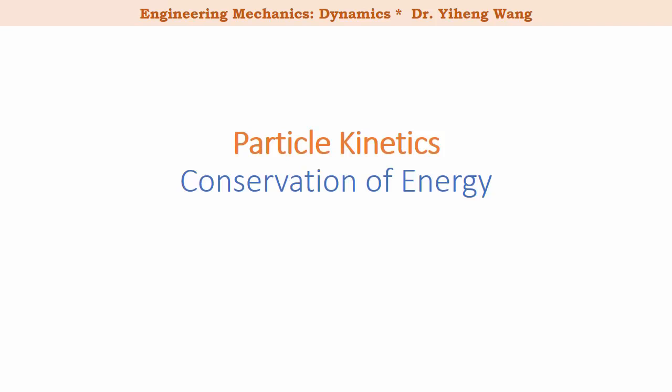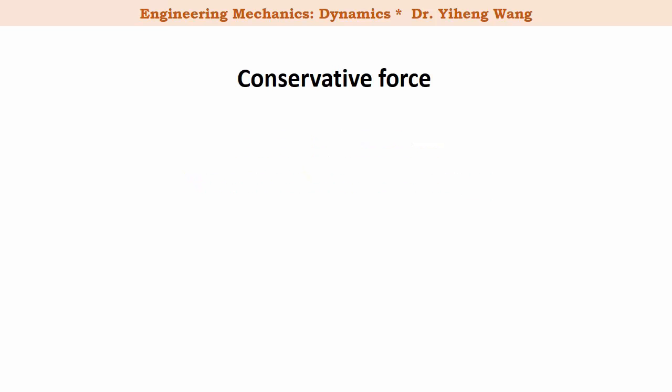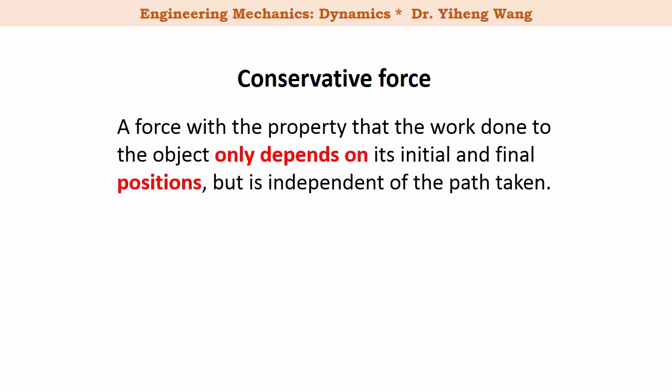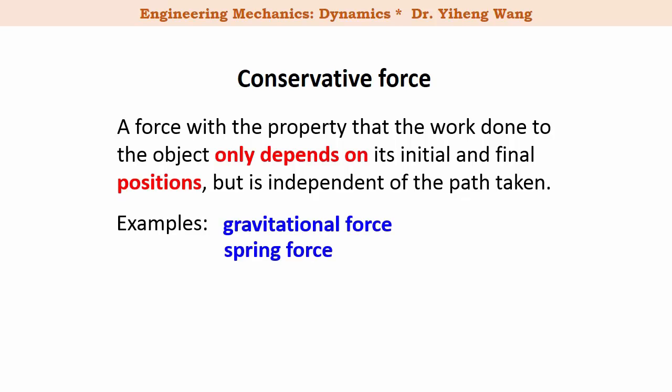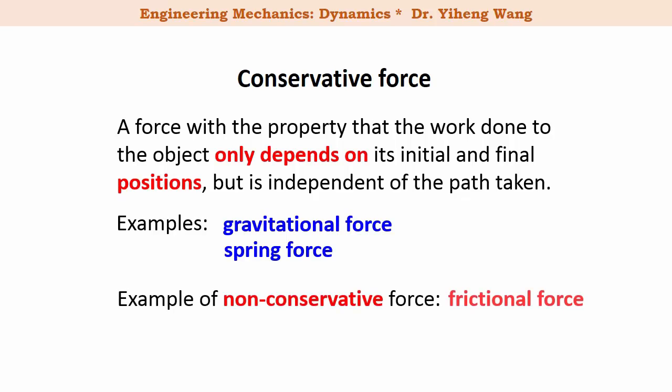The conservation of energy for particle kinetics, simply put, is that the total energy of a particle or a system of particles remains constant if only conservative forces are doing work to this system. A conservative force is the type of force that when it's doing work, the work only depends on the initial and final positions, but is independent of the path taken. Typical examples of conservative forces include gravitational force and the spring force. A typical example of a non-conservative force includes the frictional force.